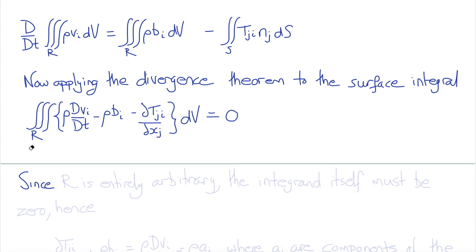Now, as we've done before, we note that since the region R over which this integral must hold is entirely arbitrary, and so it must hold for any and all regions, that means that the integrand itself, the expression inside the integral, must be zero.